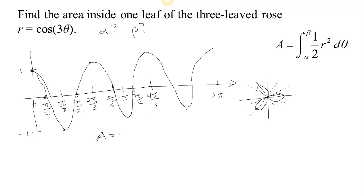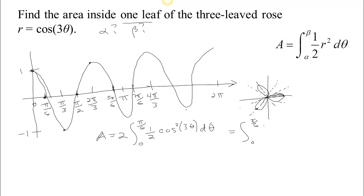The area is going to be two times the integral from 0 to pi/6 of one-half r squared d theta, where r squared is cosine squared 3 theta. So the integral we need is the integral from 0 to pi/6 of cosine squared 3 theta d theta. The hard part is setting up the integral — now we can evaluate it.